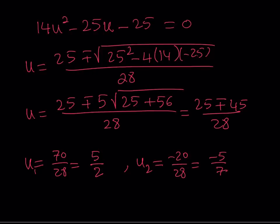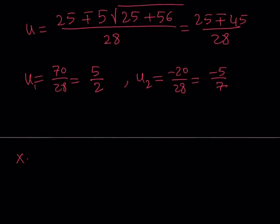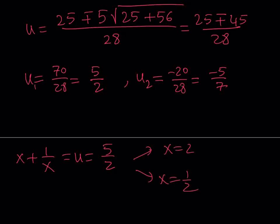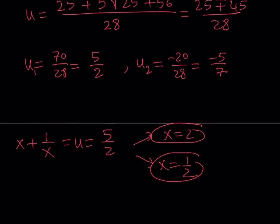I got two U values, but these are U values — I still have to find the X values. From u₁ = 5/2, setting x + 1/x = 5/2 gives x = 2 or x = 1/2. And in a reciprocal equation, if x₁ is a solution then 1/x₁ is also a solution. We already know x = 2 is valid, and x = 1/2 is also a valid solution.